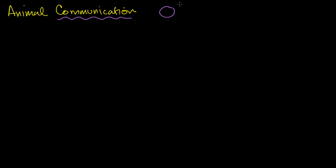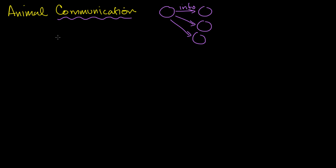Let's talk about animal communication. In general, communication is one party giving information to another party. It doesn't even have to be one to one — it could be one animal giving information to many others. Communication doesn't just have to happen between animals; a plant can communicate to an animal through its appearance or by releasing certain chemicals. But we'll focus in this video on animal communication.